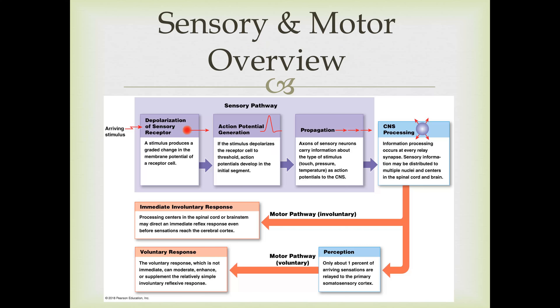Here's an overview of what we'll cover in this chapter and chapter 17. Everything starts with an arriving stimulus—external or internal—which causes the depolarization of a sensory receptor, changing its resting membrane potential. We call those graded potentials. If the graded potential reaches threshold, we get the generation of an action potential, which travels along an axon—this is called propagation. If you need to review these steps, go back to chapter 12 from last semester.